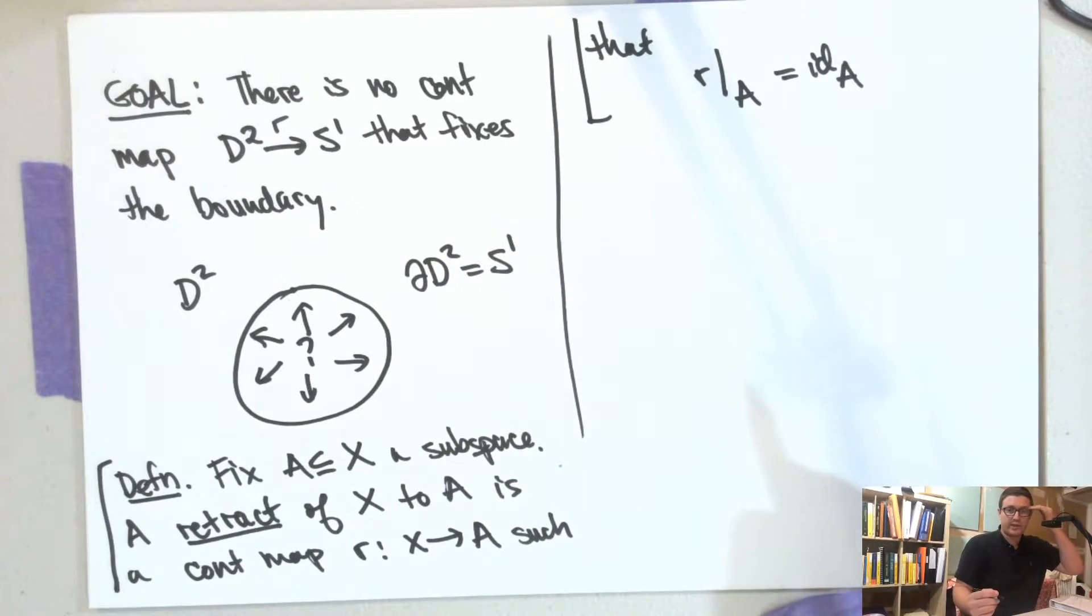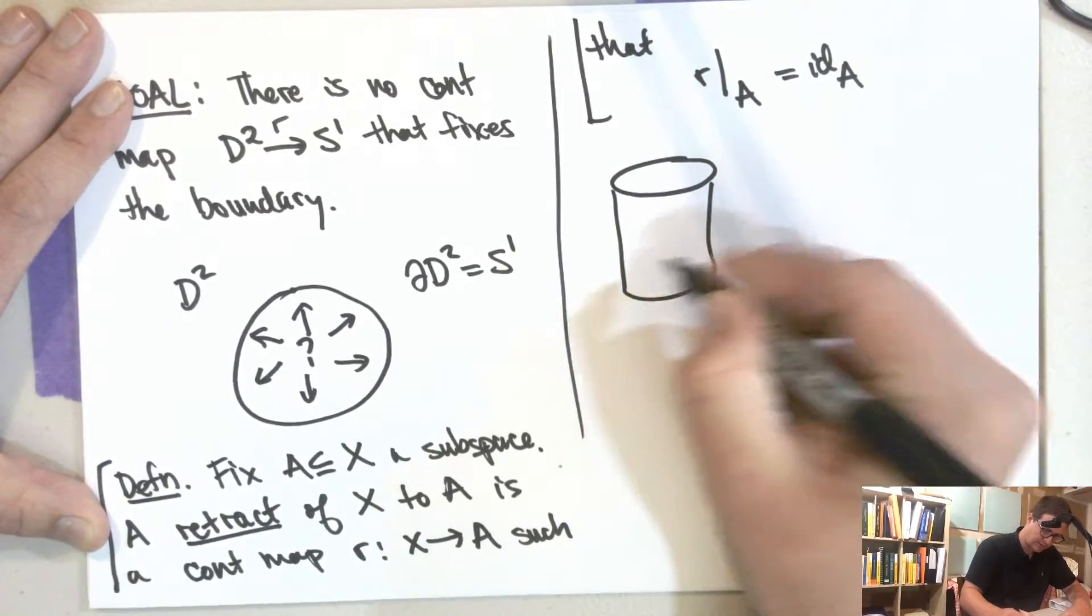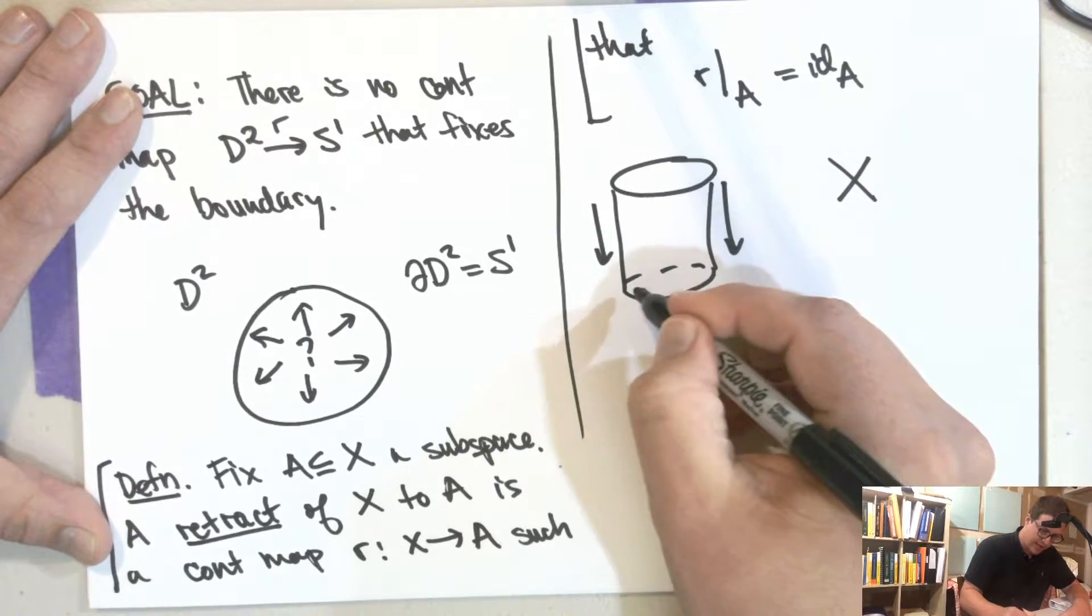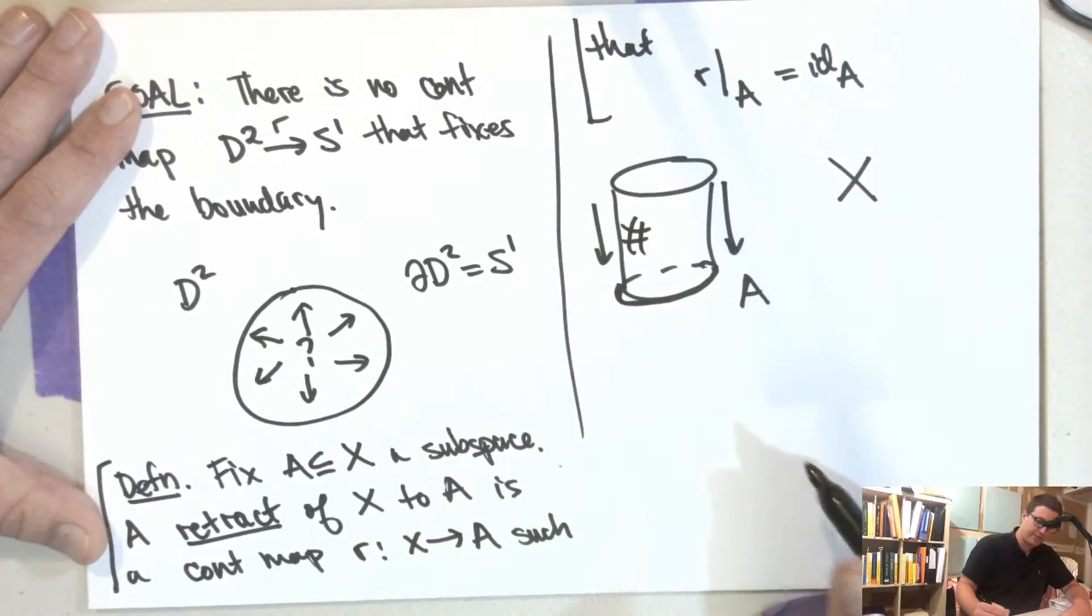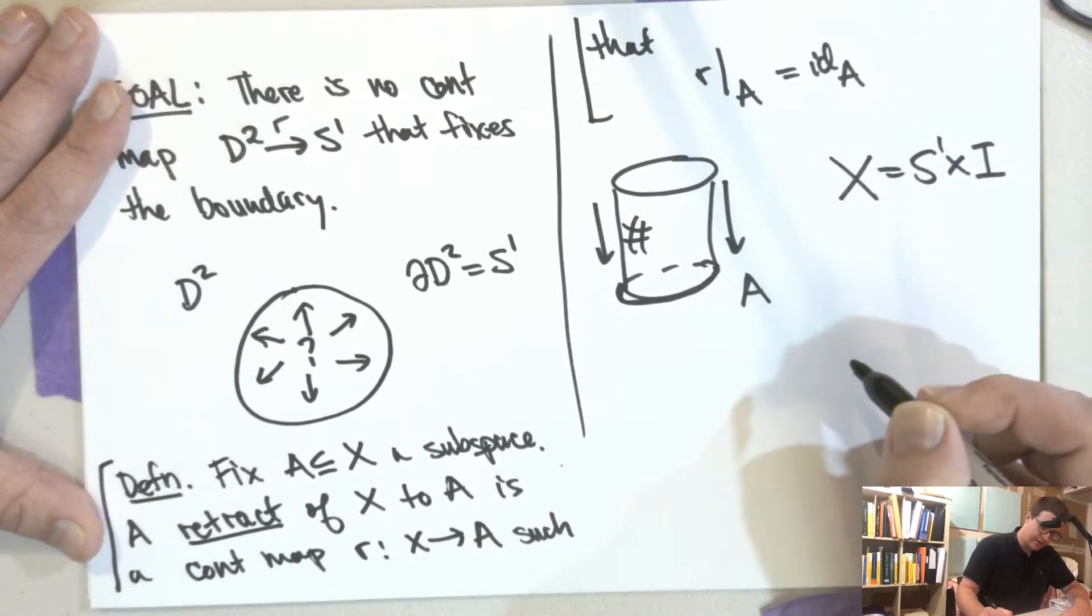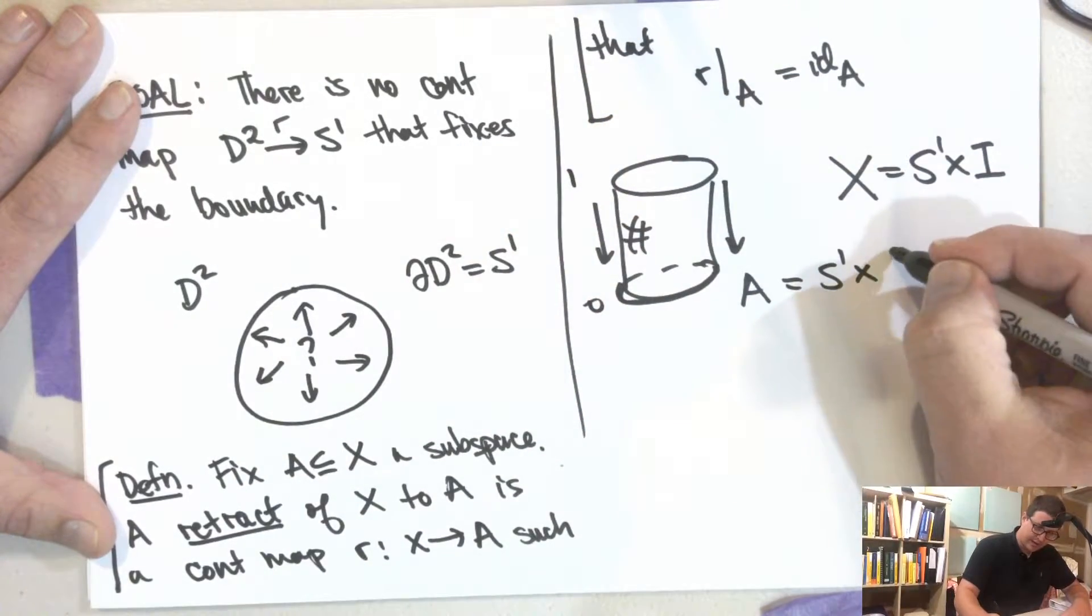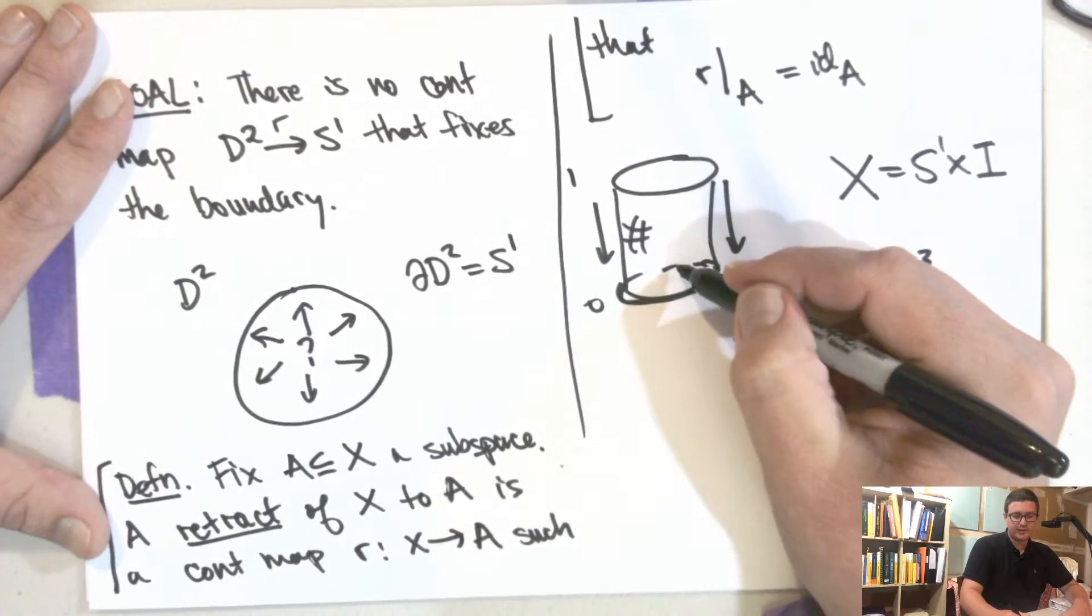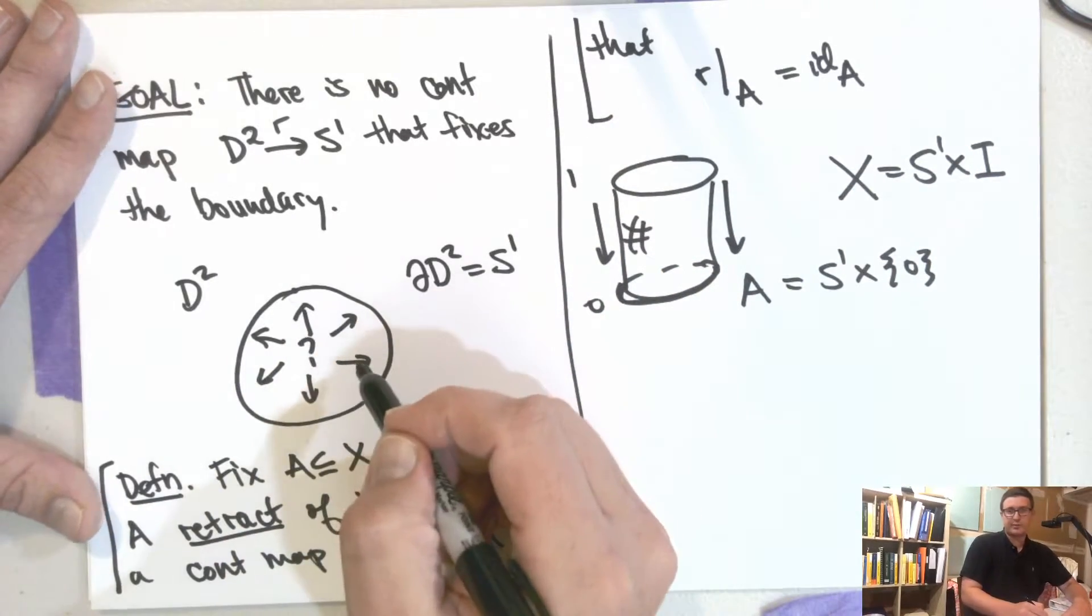And so what's an example of a retract? So like if here's a cylinder, I can just crush everything down. So the cylinder is X, so this whole thing is X. And then A is this boundary part here, this is A. So the cylinder is just the outside part. So this is, let's say, S¹ × I. And A is just equal to S¹ × 0, let's say it goes from 0 to 1. And so this is an example of where you would have a retract. So there's a continuous map where you just send it to the first component. So this is an example of, this is a retract. This one can't happen.